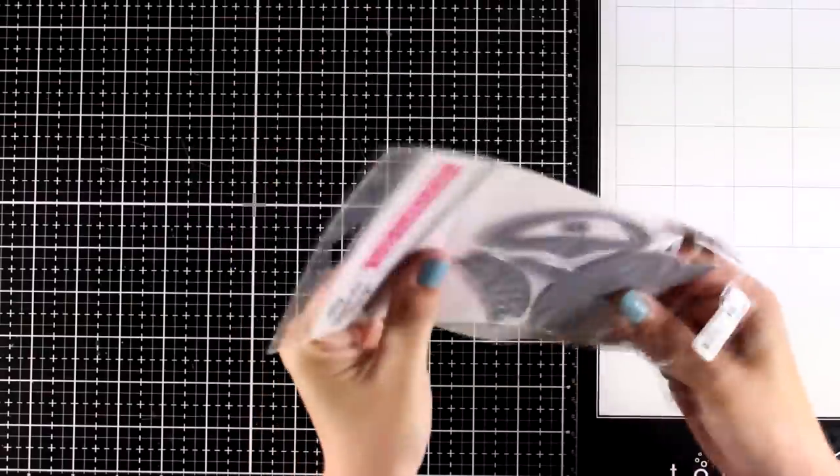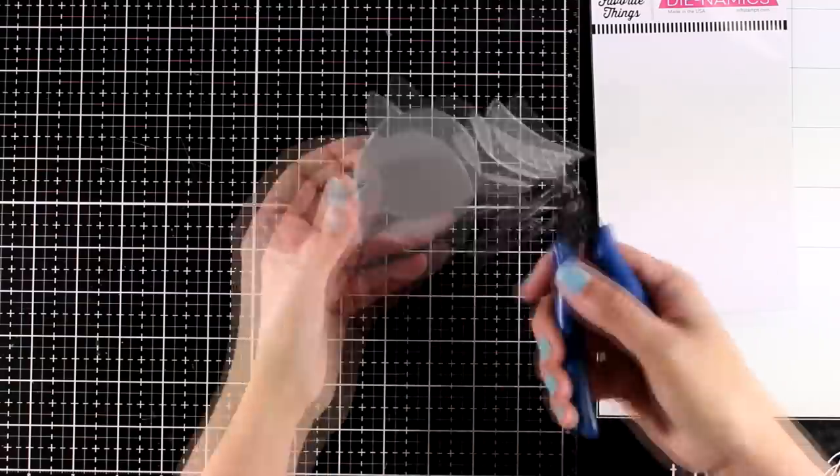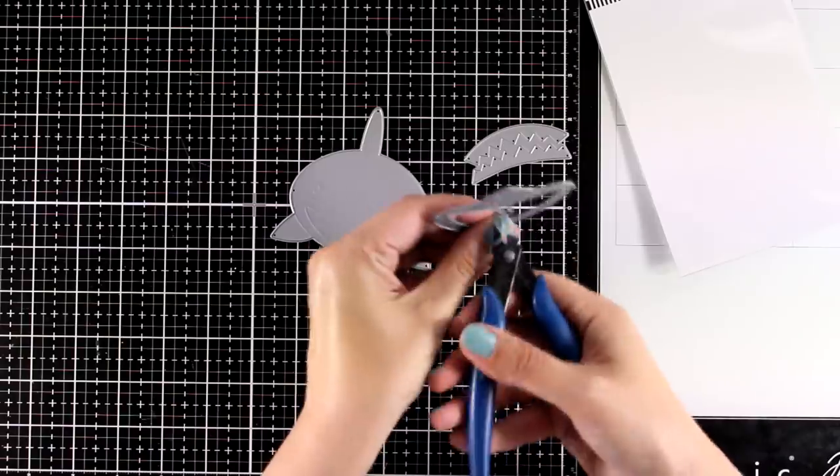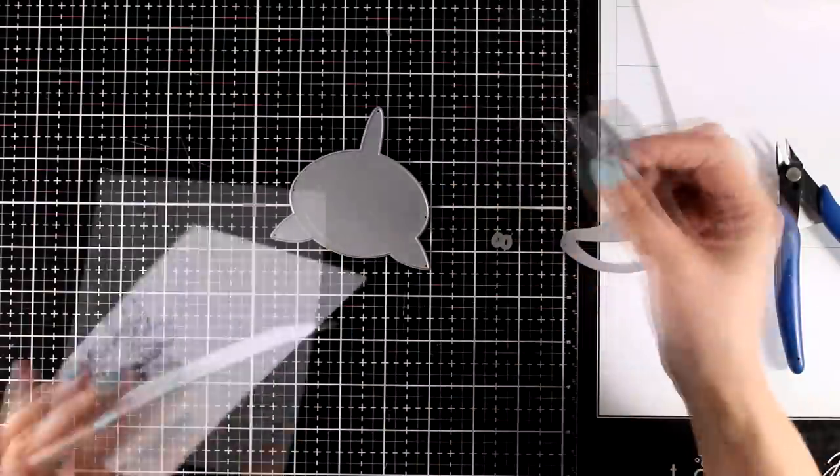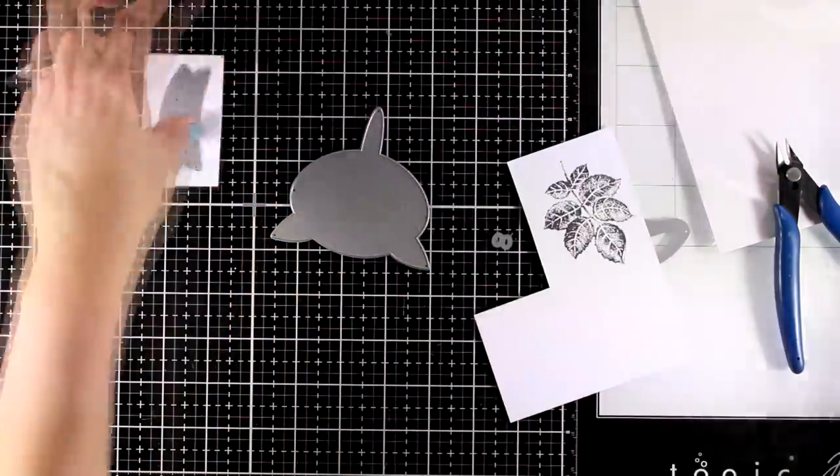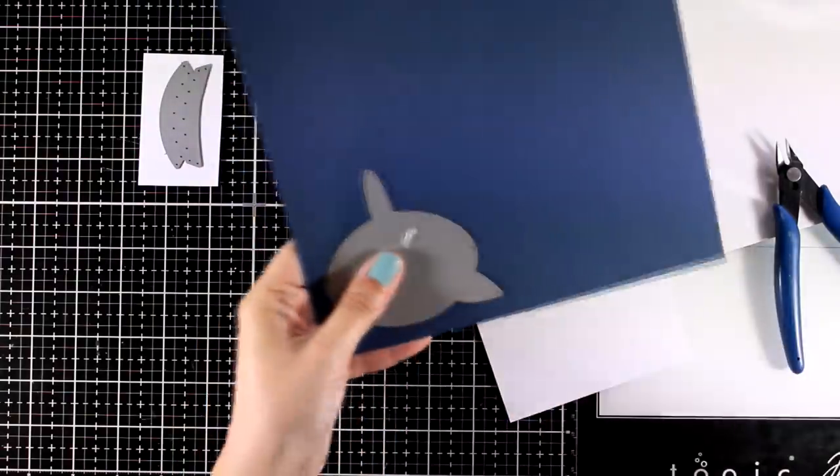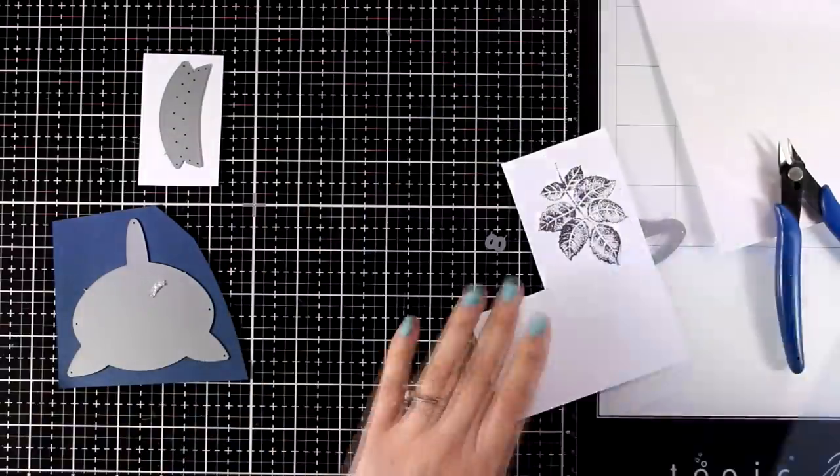And for the last card for today I am going to use the Baby Shark dies. This is a standalone die but there are sentiments that match perfectly with this one. Now the moment I saw this one I knew exactly what I am going for. I have a nephew, the son of my brother, who is turning two in about a month and I think this is going to make the perfect birthday card for him. He loves the Baby Shark song so that is what I am going for.